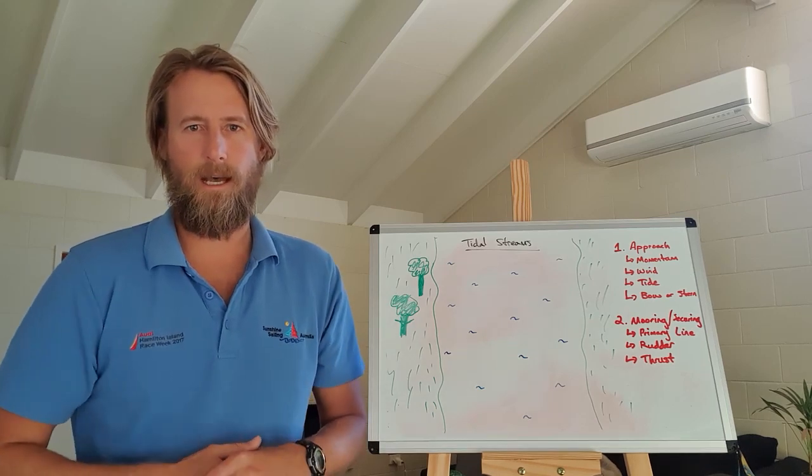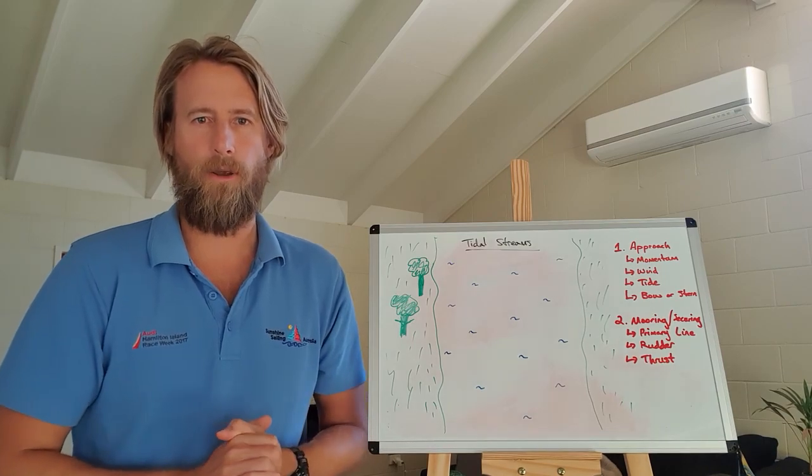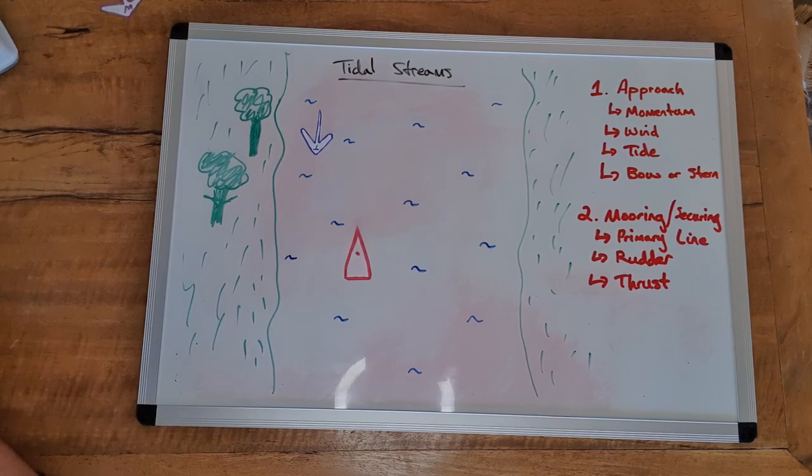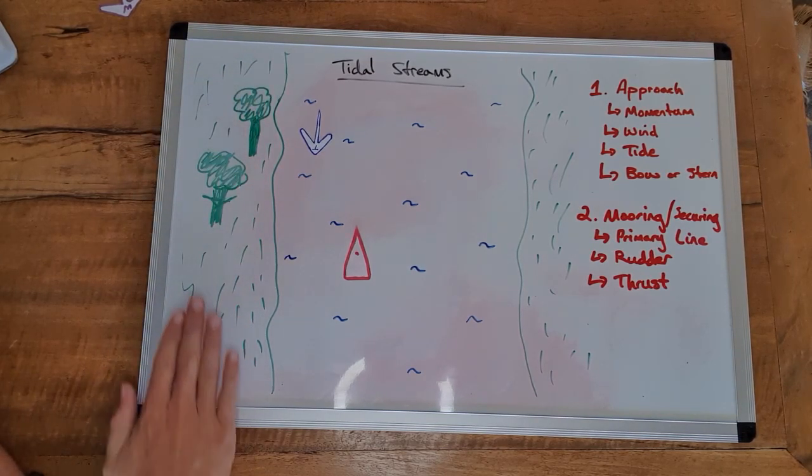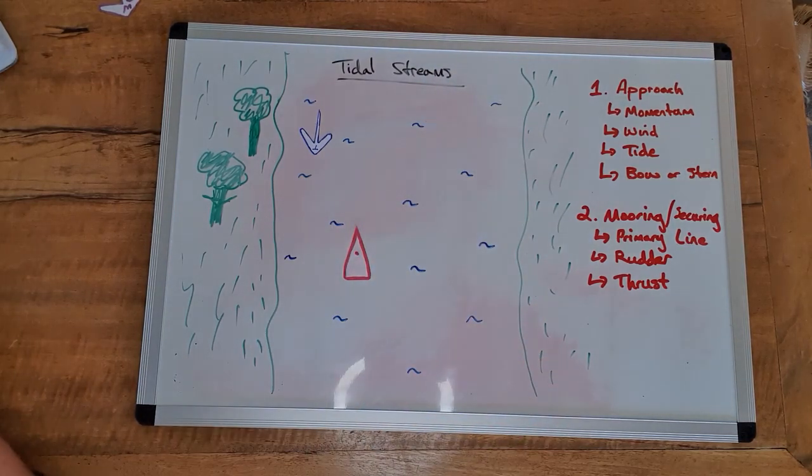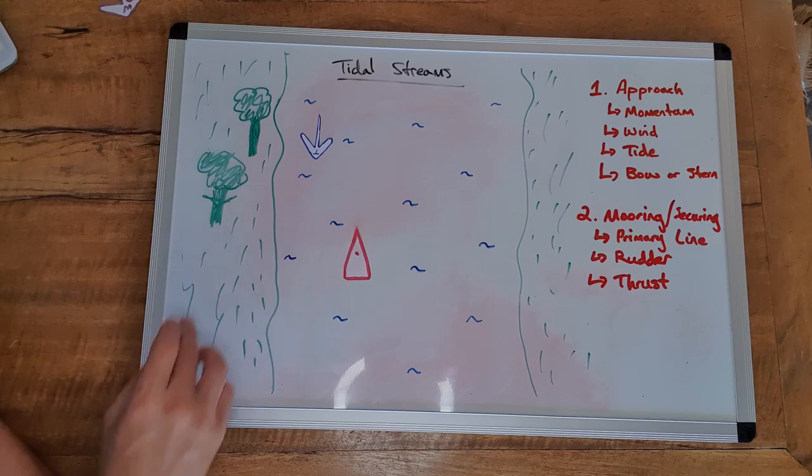So let's get into this week and just look at the effects of water flow and tide on the boat. Okay, so here we are in our river system. We've got the banks here, so here's one grassy bank with some trees on it, another one over here, and here's our river and we've got tide flowing through this river system.